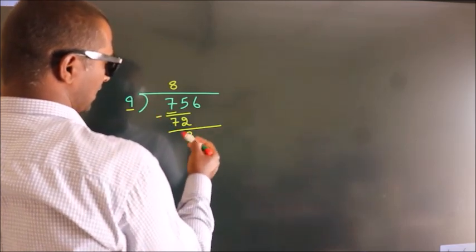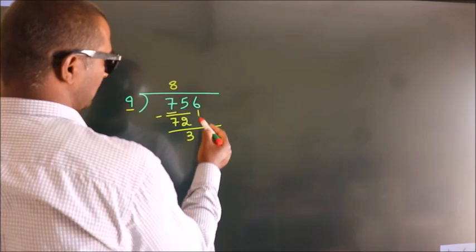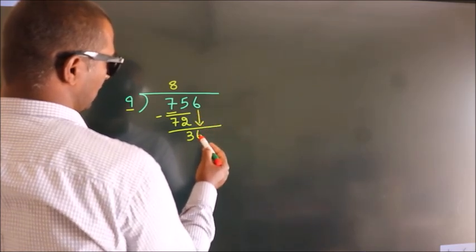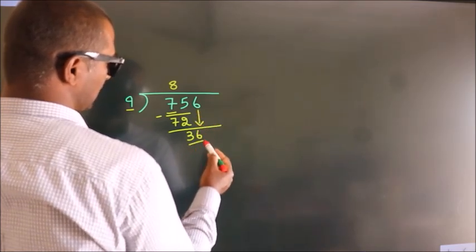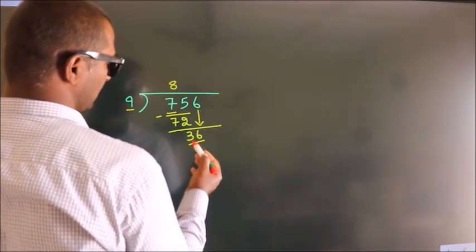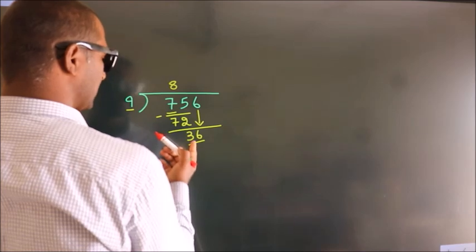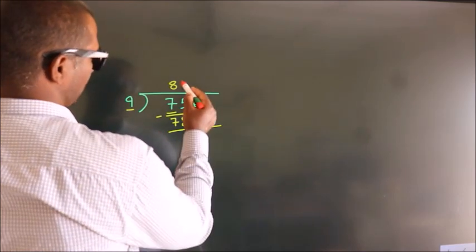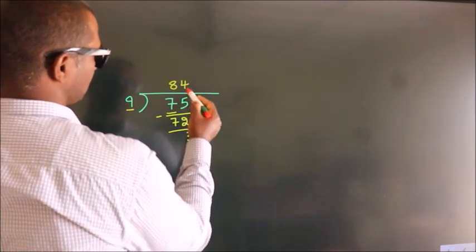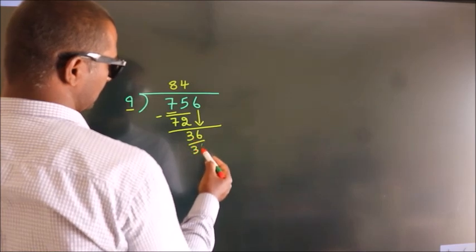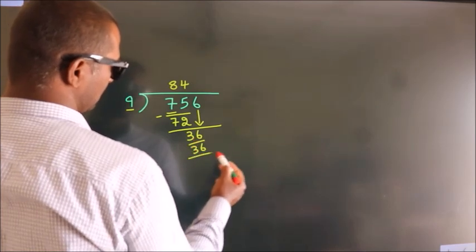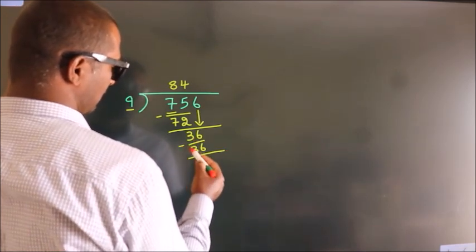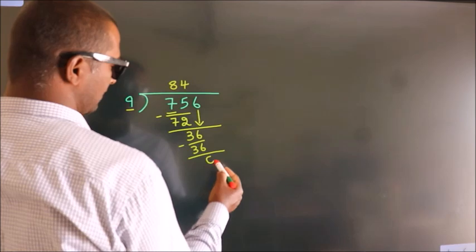After this, bring down the beside number. So 6 comes down, giving us 36. When do we get 36 in the 9 table? 9 fours are 36. Now we subtract and we get 0.